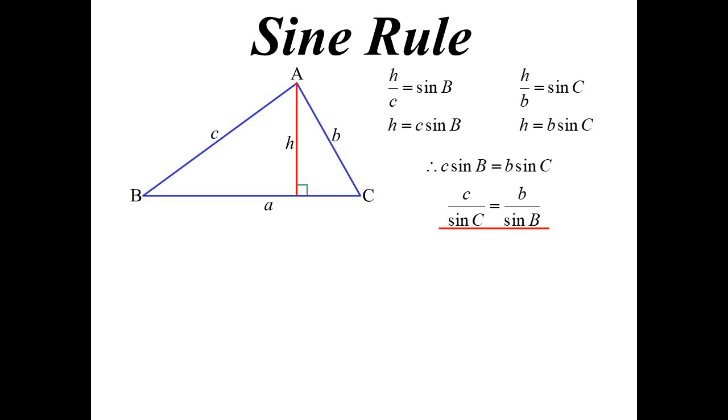And we could extend that out to the third side as well. So in any triangle, a over sine A is b over sine B is c over sine C. That's the sine rule. More about that later, but let's just do a couple of quick examples.